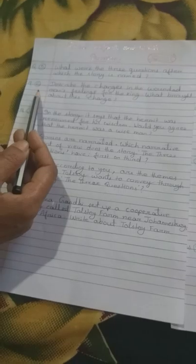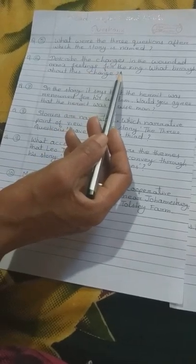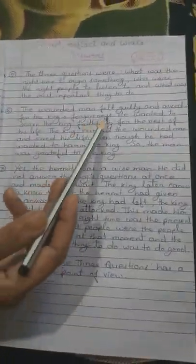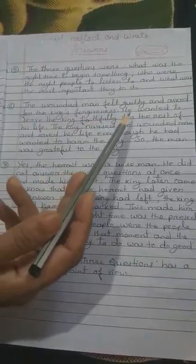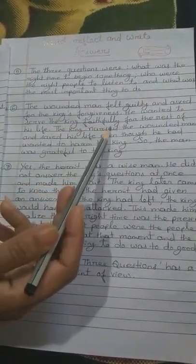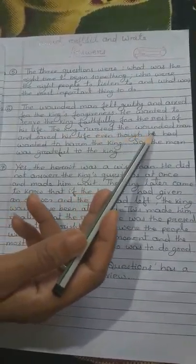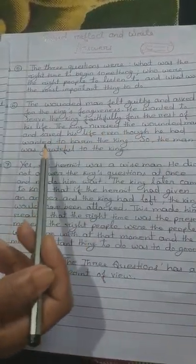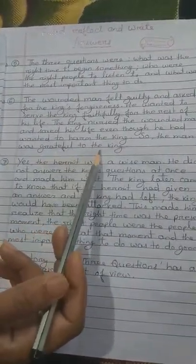Now see the question number 6, describe the changes in the wounded man's feelings for the king. What brought about this change? Then answer number 6, the wounded man felt guilty and asked for the king's forgiveness. He wanted to serve the king faithfully for the rest of his life. The king nursed the wounded man and saved his life even though he had wanted to harm the king. So the man was grateful to the king.